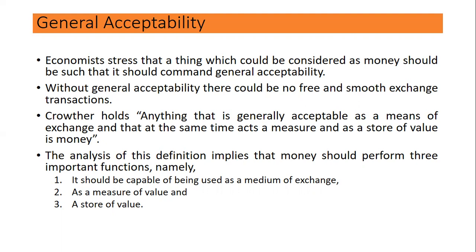Without general acceptability there could be no free and smooth exchange or transaction. If there is no general acceptability then it cannot be a free and smooth exchange. Crowlter holds that anything that is generally accepted as a means of exchange, and that at the same time acts as a measure and a store of value, is money. So they have three functions: general acceptability, medium of exchange, measure of value, and store of value.